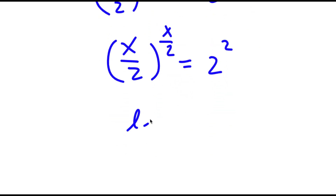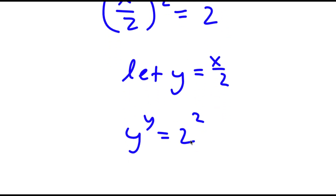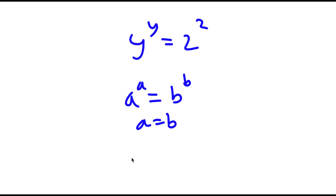Now I'm going to let the variable y equal x/2. So substituting y for x/2, I have y to the power of y is equal to 2 to the power of 2. If I have something in the form a to the power of a is equal to b to the power of b, this means a is equal to b. So in this case, y is equal to 2.